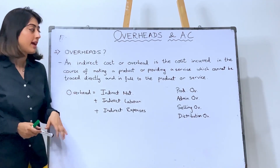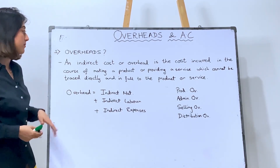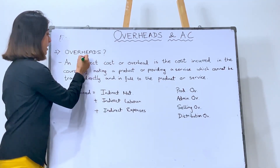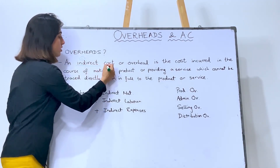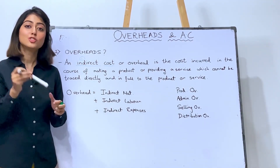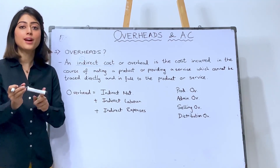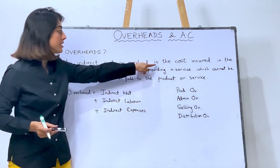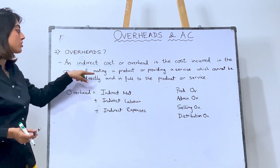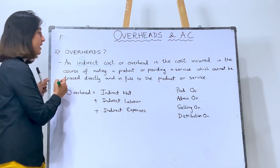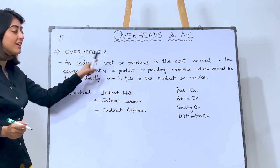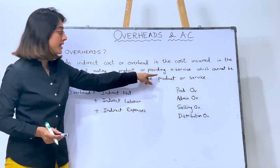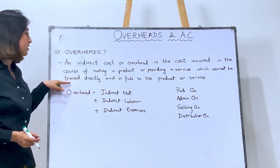Let's read the definition and see how we can connect with our examples. An indirect cost — the first thing is indirect cost. It means it is a cost that is not direct, meaning it is not a part of your product. It is an indirect cost. Next: it is the cost incurred in the course of making a product — meaning the expense that happens while the product is being made. That indirect expense, or providing a service, which cannot be traced directly.